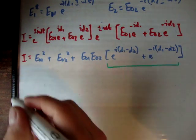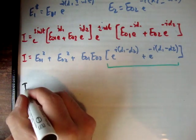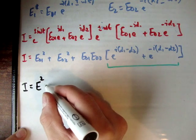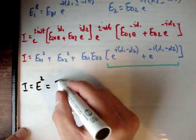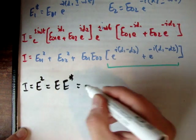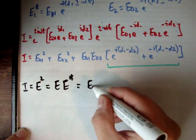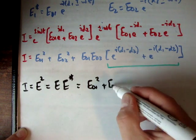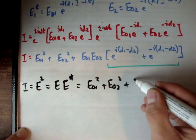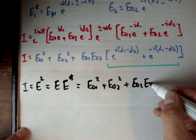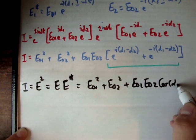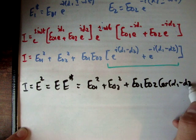So we can say that the irradiance — equal to the square of the electric field, which is E times E star — is equal to E01 squared plus E02 squared, plus their product E01·E02, times the cosine of alpha 1 minus alpha 2.